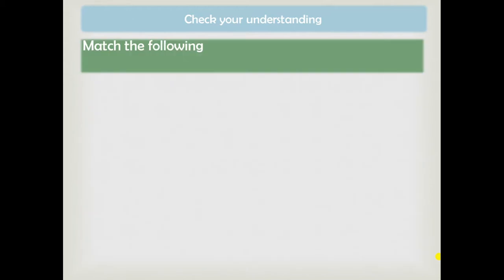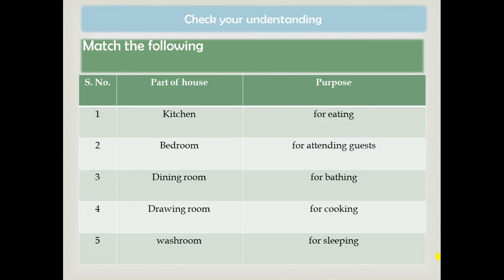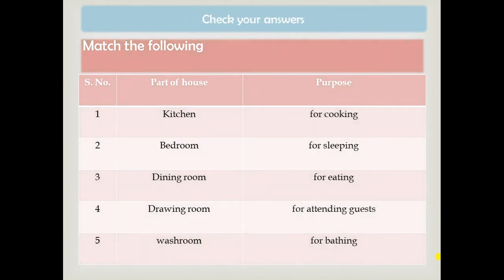The next question: match the following. These are the parts of the house — kitchen, bedroom, dining room, drawing room, washroom — and you have to match them with their purpose: for eating, for attending guests, for bathing, for cooking, for sleeping. The answers are: kitchen — for cooking; bedroom — for sleeping; dining room — for eating; drawing room — for attending guests; washroom — for bathing.